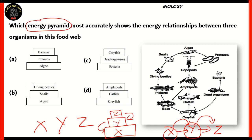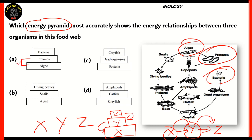If we look at the options, option A says algae, protozoa, bacteria. Now, if we look at the three organisms in this food web, we can see that algae being consumed by protozoa is correct. But if we look at bacteria, bacteria over here is in a totally different food chain — it's in the same food web but a different food chain. That's why option A is incorrect.